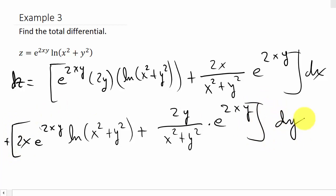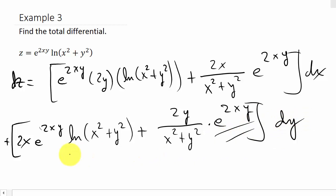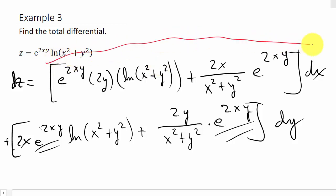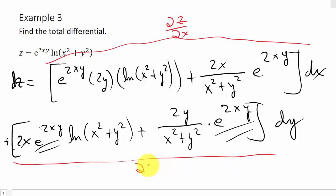You can clean it up — you could factor out a 2 and e to the 2xy from both terms. I'll let you handle simplifying that. Remember, the first part is the partial of z with respect to x, and the second part is the partial of z with respect to y. That's all for that — I hope it helped. Check out my other videos, and don't forget to like and subscribe. Thanks for watching.